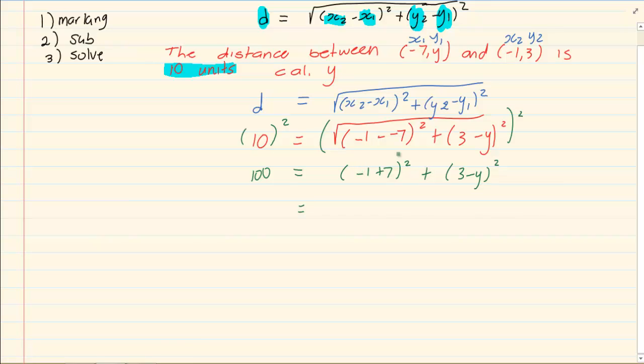Minus 1 plus 7 is 6. 6 all squared is 36. Plus, open brackets, 3 minus y all squared. I am going to take my 36 over so it becomes negative 36, giving me 64 equals 3 minus y all squared.